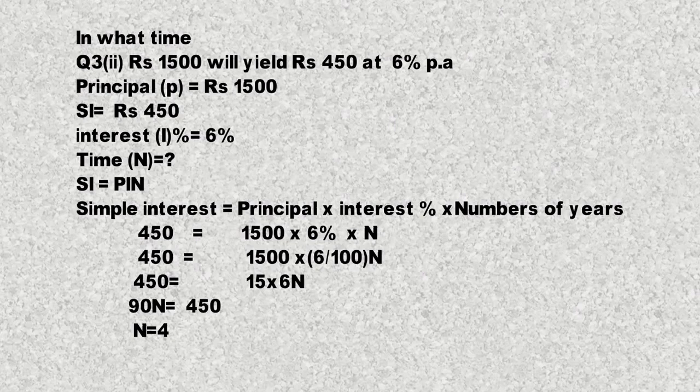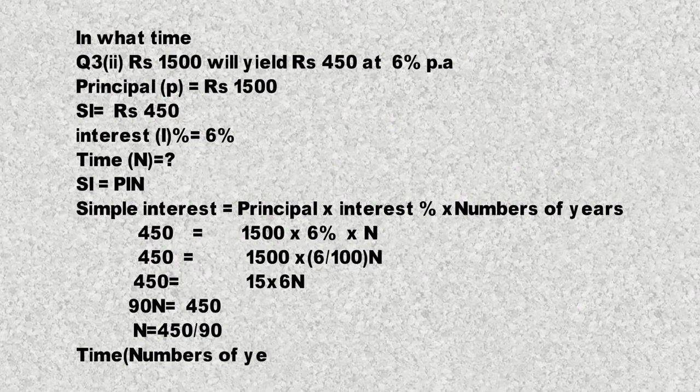n = 450 کو 15 × 6 = 90 سے divide کریں گے تو n = 450/90 = 5 آئے گا۔ تو n = 5 years۔